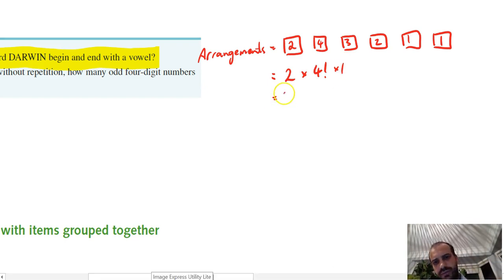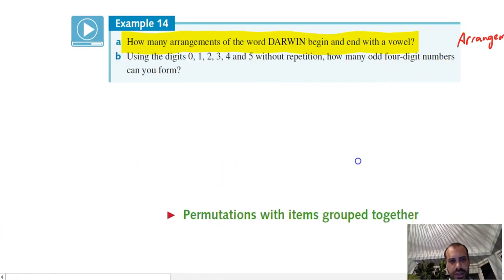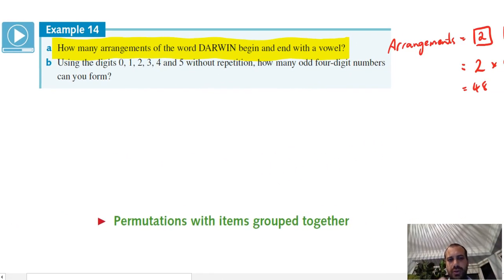Alright, let's look at our next question here. Using the digits 0, 1, 2, 3, 4, and 5 without repetition, how many odd four-digit numbers can you form? Alright, so they have to be odd. In order for them to be odd, let's do a little box method again. Alright, so first of all, they're four-digit numbers - maybe I'll use like a line method instead of a box.